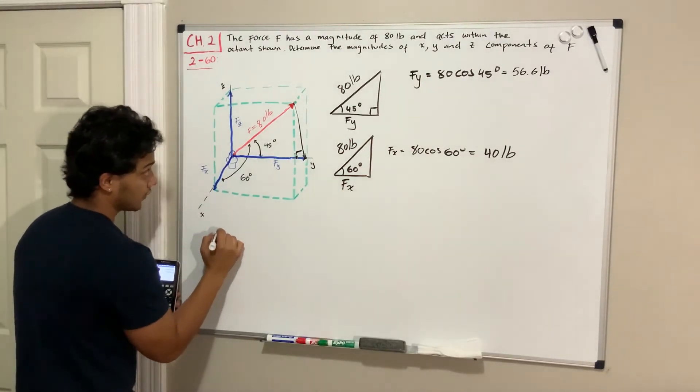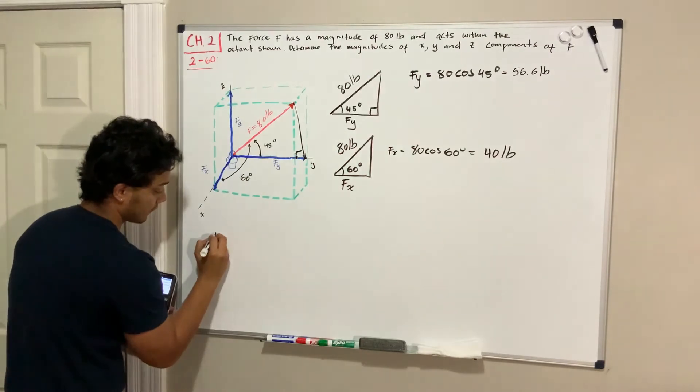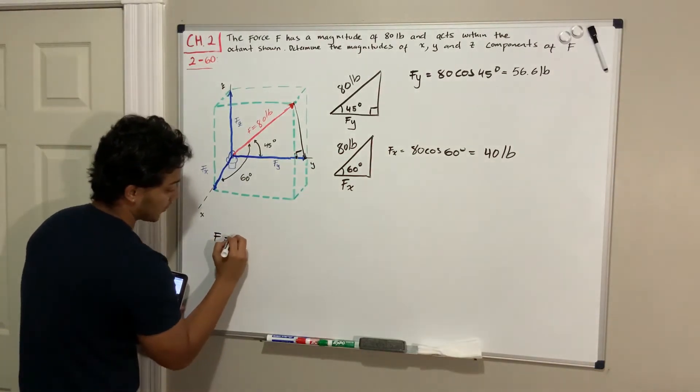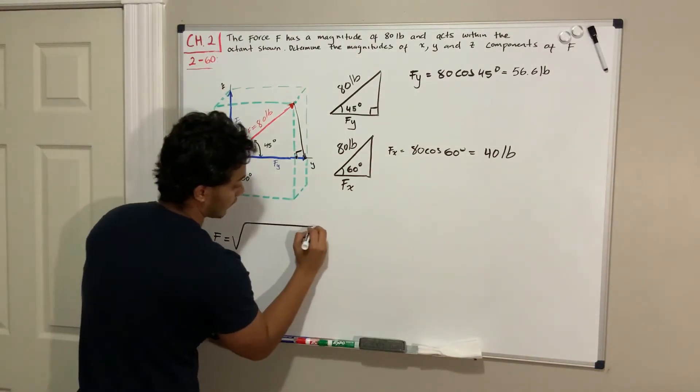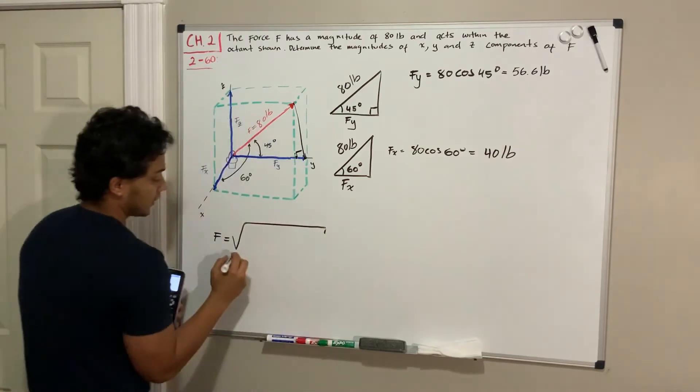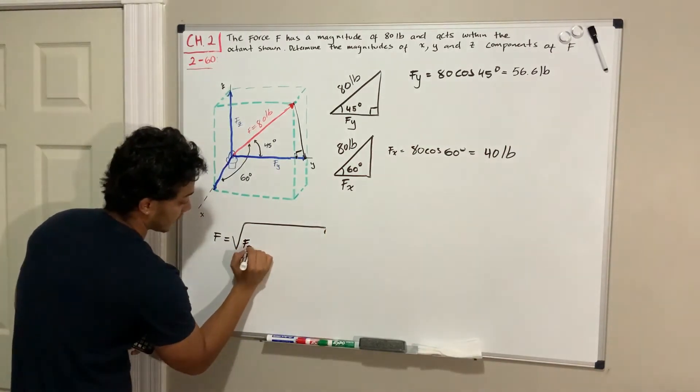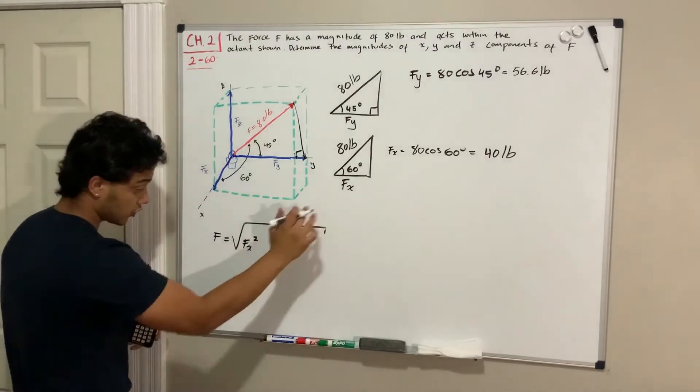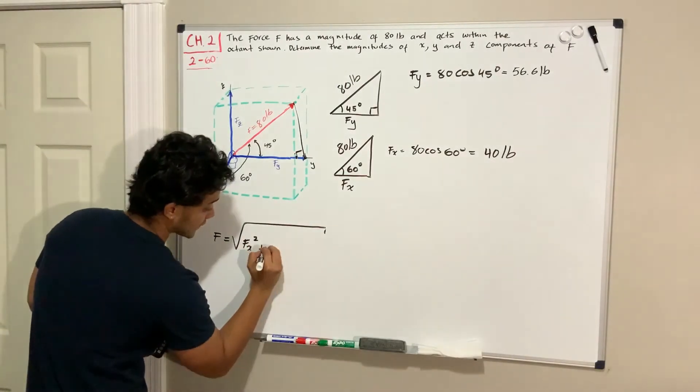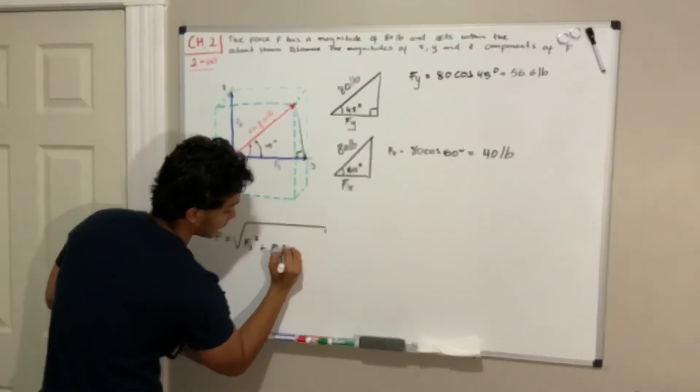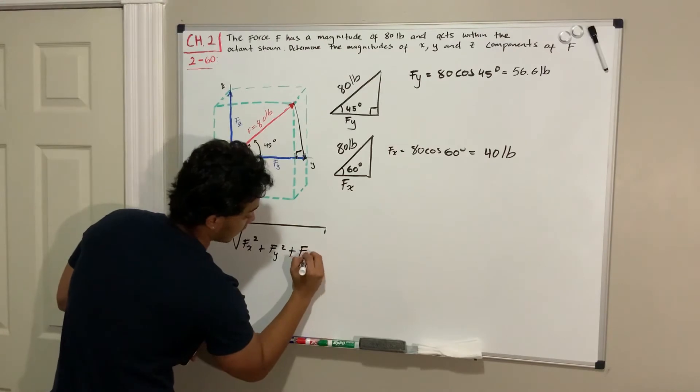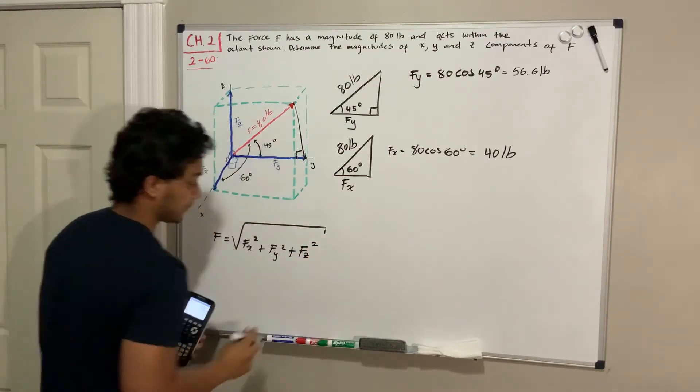We know that the resultant, which is F, has to be equal to, if we apply Pythagorean theorem, the square root of F of X squared plus F of Y squared plus F of Z squared.